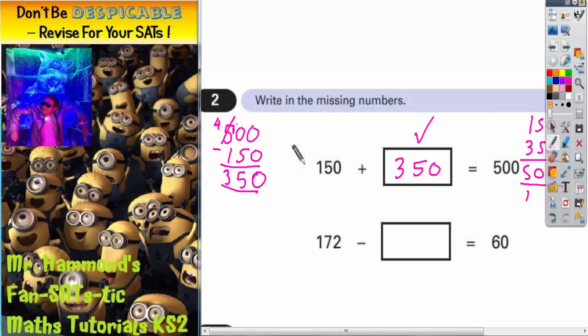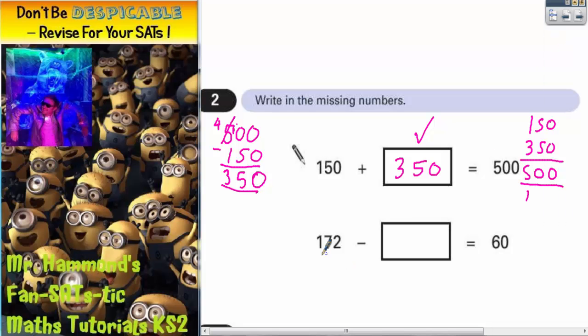Let's get a different colour for the second part of the question. 172 minus this number must equal 60. So we need to find the difference between 172 and 60.